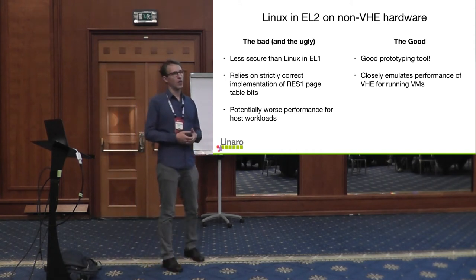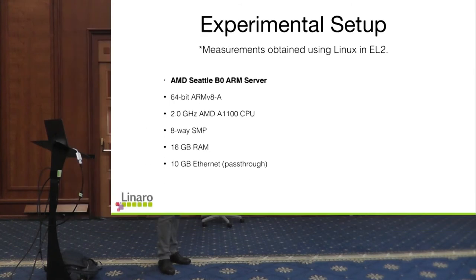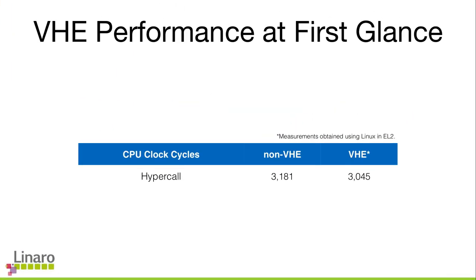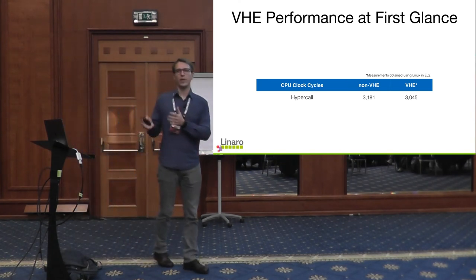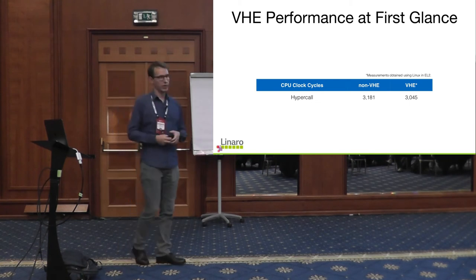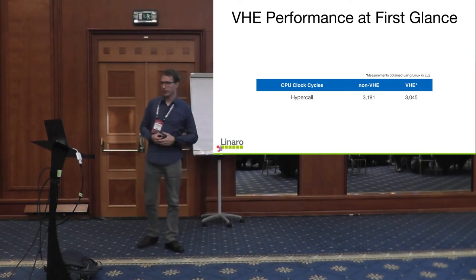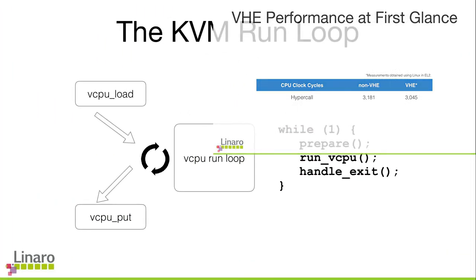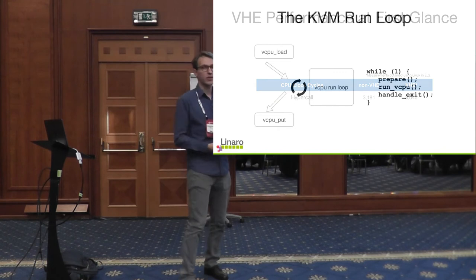To measure performance we used an AMD Seattle. Looking at the cost of a hypercall as a microbenchmark — measuring the basic transition cost of going from the VM to the hypervisor and back — comparing unoptimized KVM ARM without VHE against VHE-emulated performance with Linux in EL2, we only get about a hundred cycles improvement. The reason is that all we really did in terms of KVM performance was change the trap to a function call, which gives about those hundred cycles.